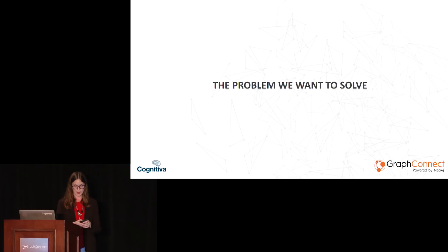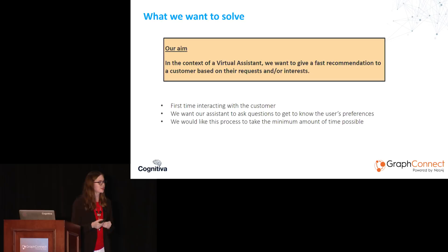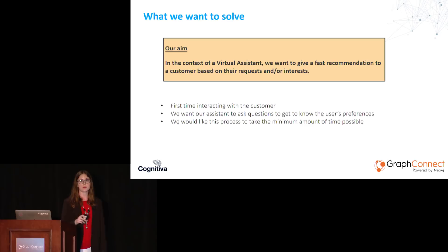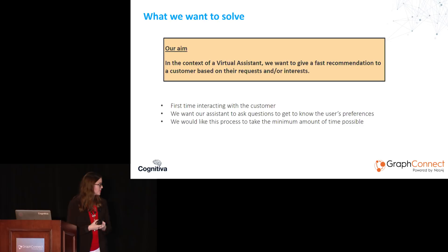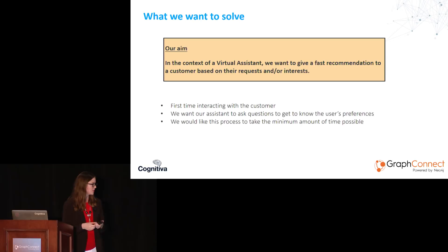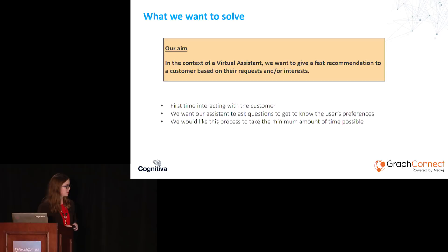The problem we would like to solve: our goal was, in the context of a virtual assistant, to give a fast recommendation to a customer based on their request and/or interests. We may assume this is the first time we're interacting with the customer, so we have no previous knowledge about their preferences. We would like to gather that information through our virtual assistant, which will ask questions to get to know the user's preferences, while ensuring a good user experience — a chat in natural language via Watson Assistant — with the process taking the minimum amount of time possible.